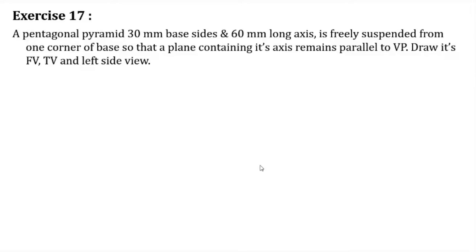This is the case of a pentagonal pyramid. The condition is that it is freely suspended from one corner of the base so that a plane containing its axis remains parallel to the VP. That means the axis is parallel to VP and has only one inclination with the HP. We have to draw the front view, top view, and left side view.